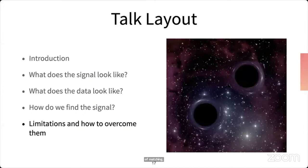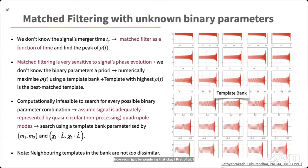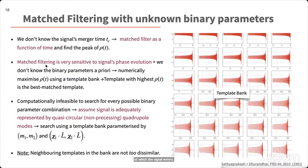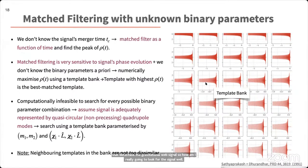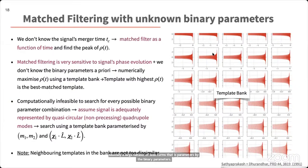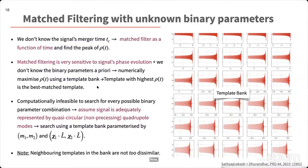You might wonder: since we don't know where in the data the gravitational wave signal is sitting, how do we find it? You can matched-filter as a function of time and then find the peak in the SNR time series — that peak gives you the time instant at which the signal enters the detector data. You also might not know the binary parameters, so you create a template bank: a large collection of waveforms parameterized by binary parameters, and you numerically maximize the SNR over each template. Since matched filtering is very sensitive to the signal's phase evolution, there will be one template — the best-match template — that maximizes the SNR.